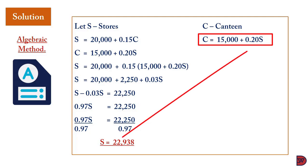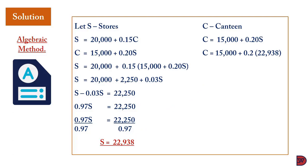Substituting S = $22,938 into the canteen expression: C = 15,000 + 0.20 × 22,938 = 15,000 + 4,588 = $19,588. These are the figures to be reapportioned across the other departments.